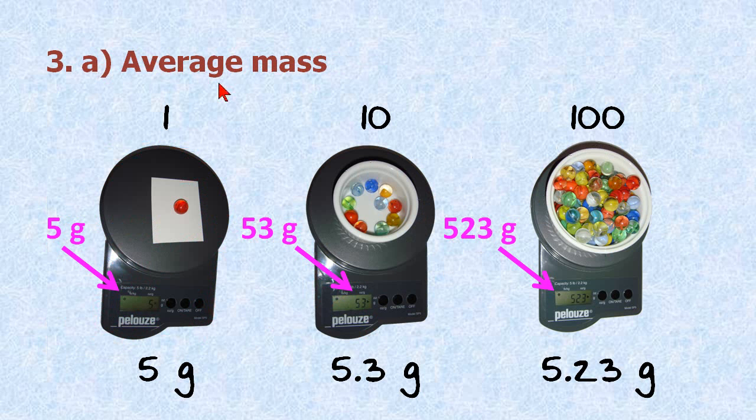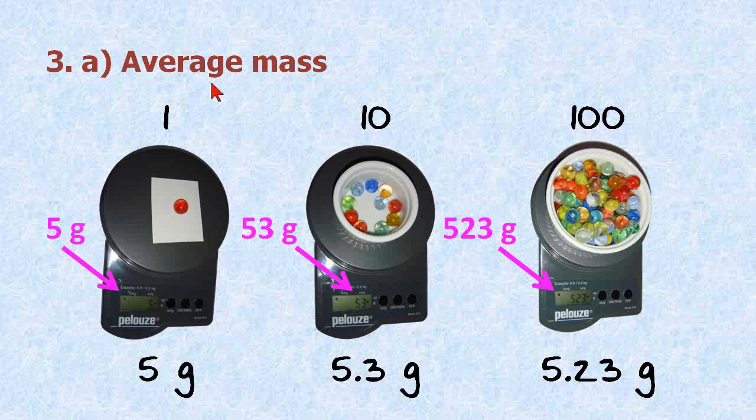First I'm going to determine the average mass of a marble. If I just weigh one marble, I only get one significant figure, which is the 5 grams. If I weigh 10 of them, I get 53 grams. I divide these numbers, I get 5.3 grams, and if I weigh 100 marbles out, I get an average mass of 5.23 grams, which is better precision to work with in our example here.